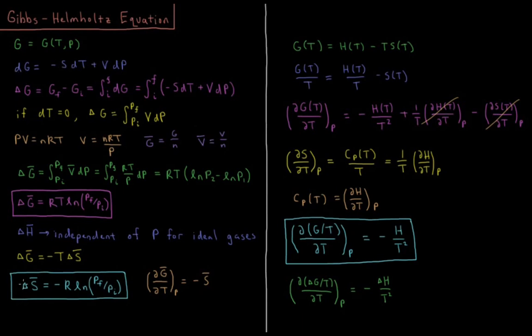So the change in the molar entropy that occurs during an expansion or compression of an ideal gas is equal to negative the gas constant times the natural log of the final over initial pressure.